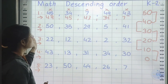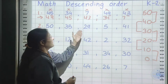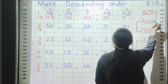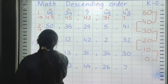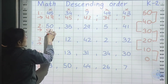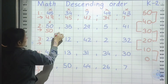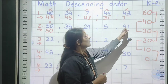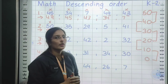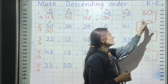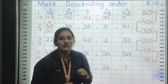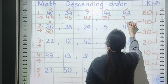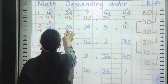Moving to question number 2. The numbers are 50, 35, 29, 5, and 41. Start from the line 50 to 40. Is any number there? Yes — 50 comes first. Write 50 and put a comma. Again search in the same line — 41 is also in that line. Put cross mark on 41 and write 41, comma.